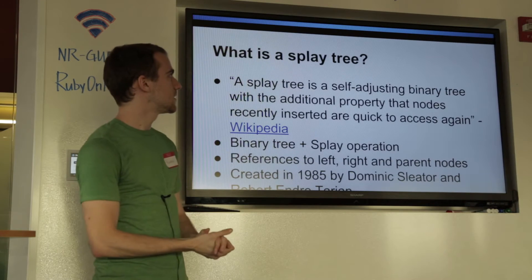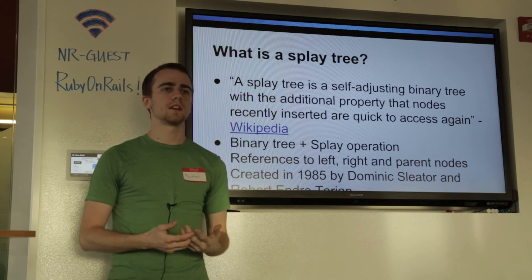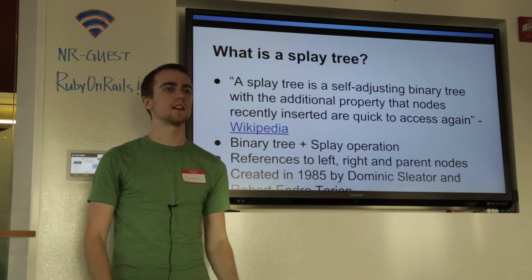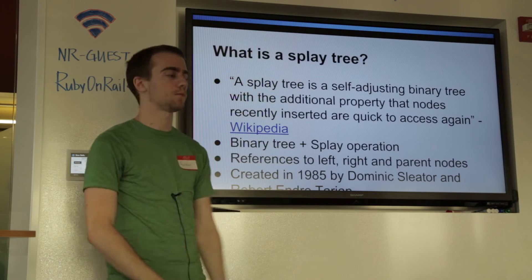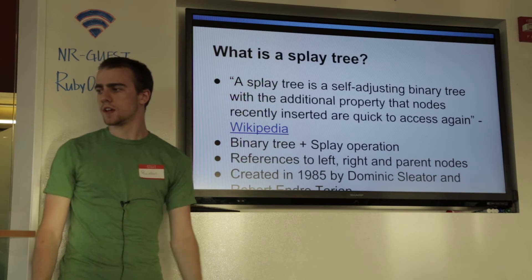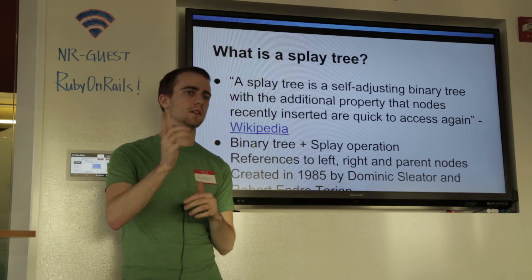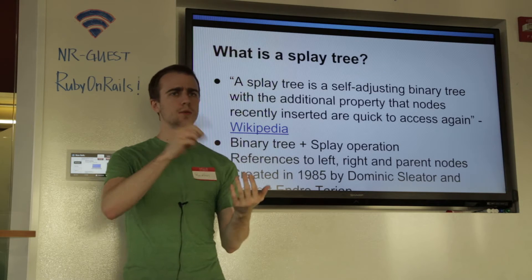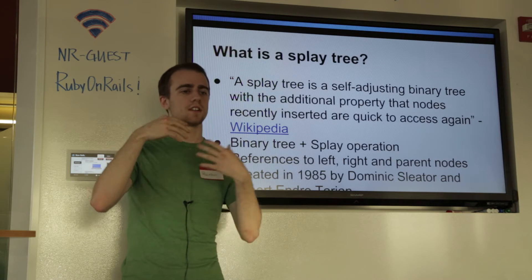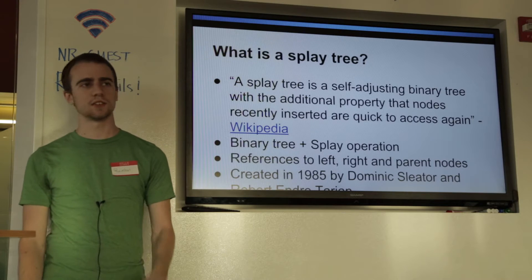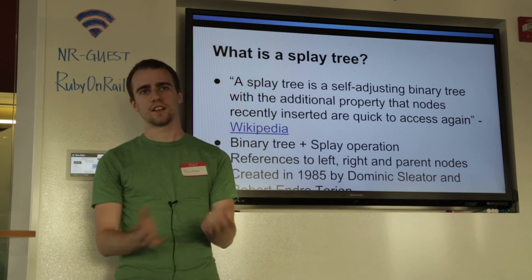So what is a splay tree? A splay tree — ganking again from Wikipedia — is just a binary tree with the added benefit that inserting nodes puts them to the top so they're quick to access. Like if you just inserted some new value it would be right at the top next time you wanted to find it. Just a binary tree plus splay optimization. In our implementation we have left nodes, right nodes, and references to parent nodes. This lets us save memory when traversing and a whole bunch of other stuff. There are implementations where you do top-down splaying but those papers are from 1975 and use single-letter variable names.